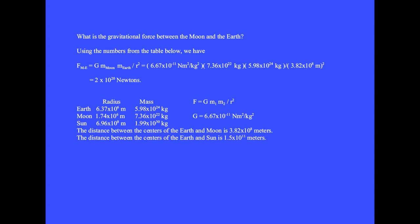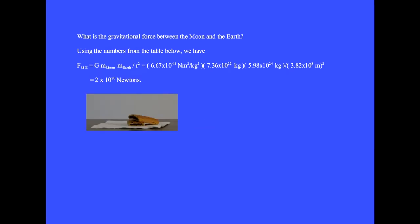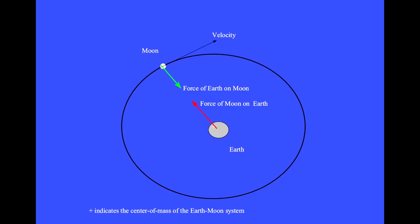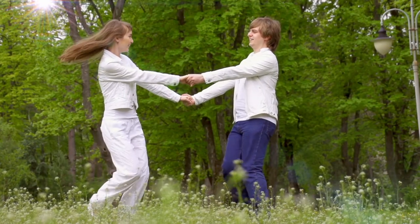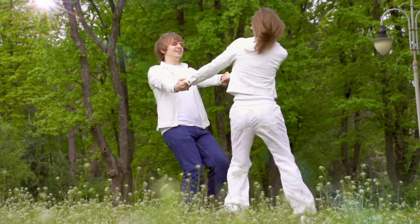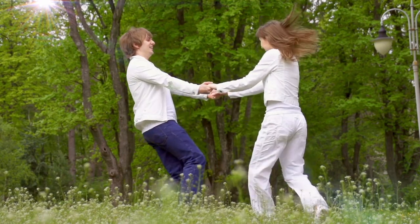What is the gravitational force between the moon and the Earth? Using the numbers from the table, we finally get a huge force: 2 times 10 to the 20th newtons. The moon would travel in a straight line at constant velocity forever, but the huge gravitational force between the Earth and the moon causes the two to orbit each other, in the same way that two persons hold hands and orbit each other. The gravitational force reaches across space without physical contact.